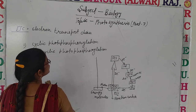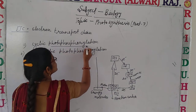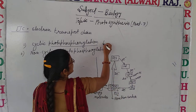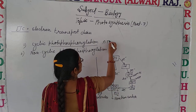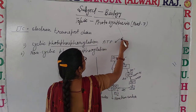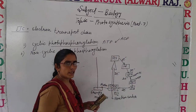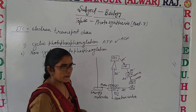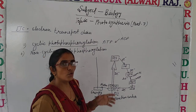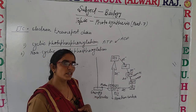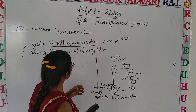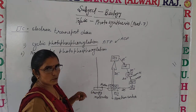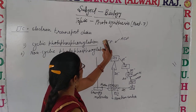So first, what is photophosphorylation? Photophosphorylation means the formation of ATP from ADP by utilizing the energy of electrons. These electrons move through various electron acceptors, and this takes place through two pathways: cyclic photophosphorylation and non-cyclic photophosphorylation.